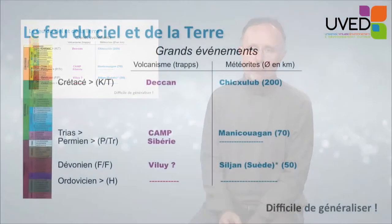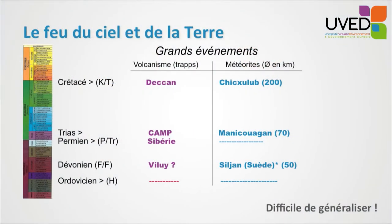Now, here we have the fire of the Earth and the sky — meteorites falling from the sky or volcanic activity. For the Ordovician crisis, we couldn't find an event that matched the crisis. For the Devonian, we think there might have been a volcanic eruption in Scandinavia, but for stratigraphic purposes we don't know exactly if it matches. For the other crises, we have volcanic activity in Siberia, the Central Atlantic, or in India — huge quantities of lava, several kilometers deep, released a few million years ago. And for meteorites, we only have three meteorite impacts which more or less match the crisis episodes.